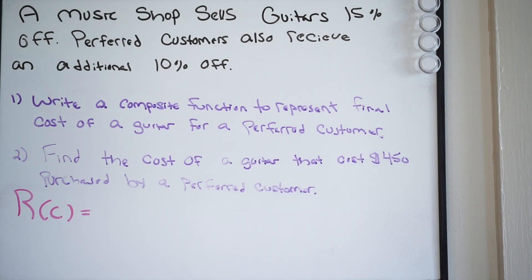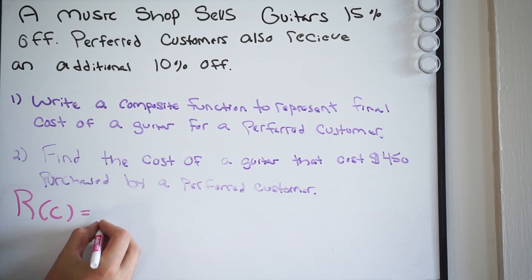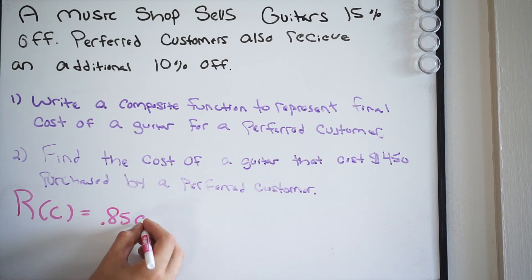You start at 1.0 and then you subtract whatever percent you're trying to discount. In this case, it would be 0.15. So 1.0 minus 0.15 will give you 0.85.